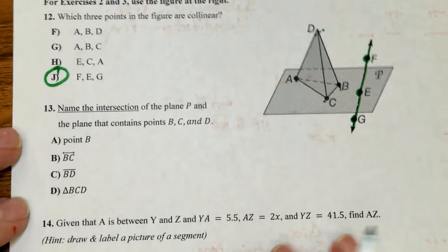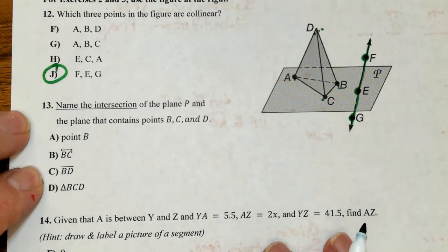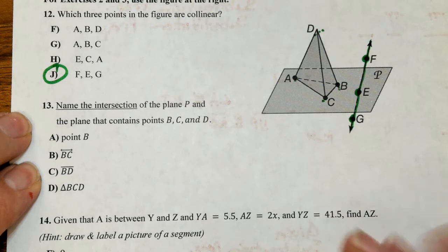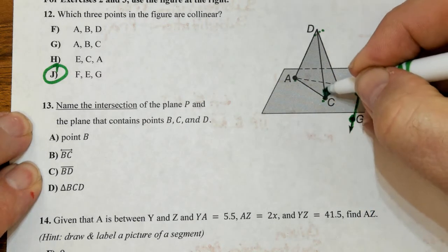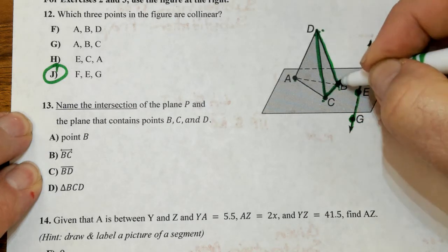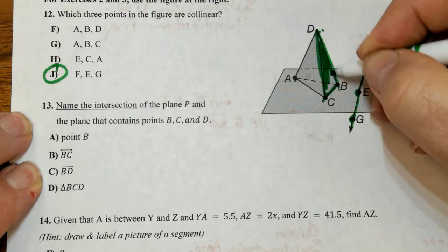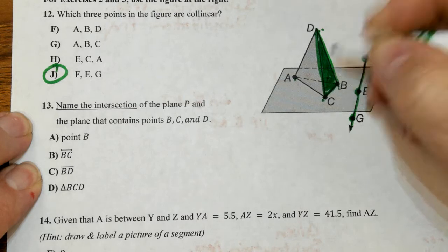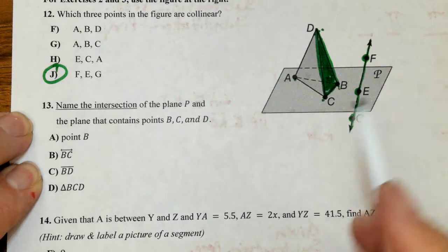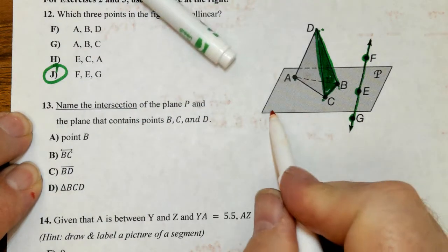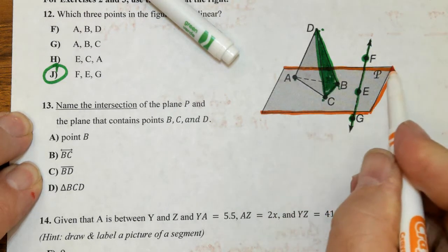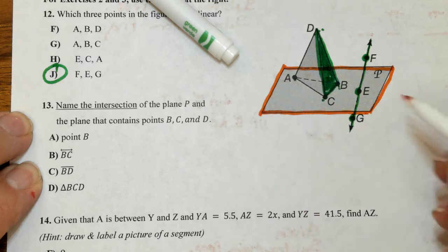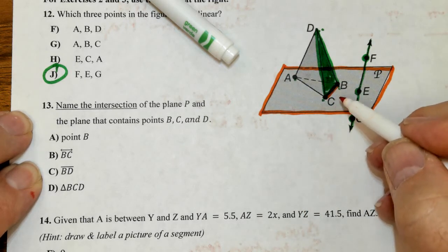The next one. Name the intersection of plane P and the plane that contains point B, C, D. So the plane that contains B, C, D is right here. So that's this plane right here. And this plane is intersecting with plane P, which is this plane. Now remember when two planes intersect, the result is a line, and that line is line BC.